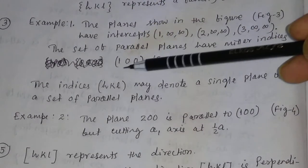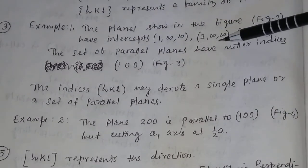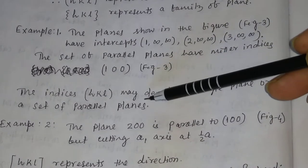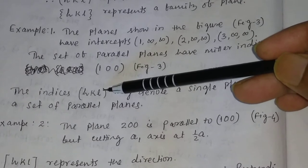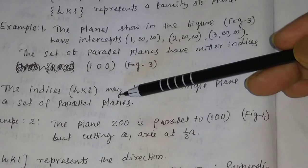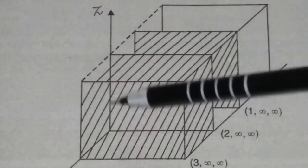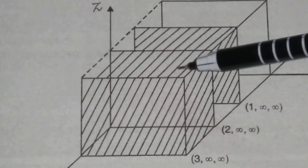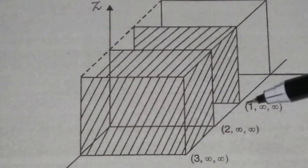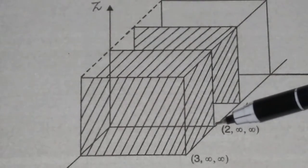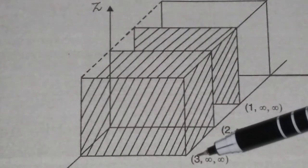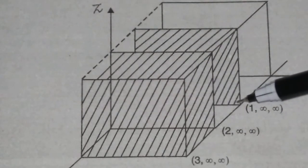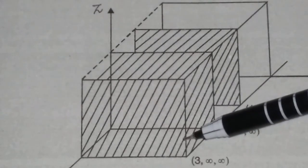The indices (H K L) may denote a single plane or a set of parallel planes. In the figure, a set of parallel planes is shown — for the plane with intercept 1, infinity, infinity, the Miller index is (1 0 0); for the plane with intercept 2, infinity, infinity, the Miller index is also (1 0 0); and for the plane with intercept 3, infinity, infinity, the Miller index is also (1 0 0). All these parallel planes share the same Miller indices.